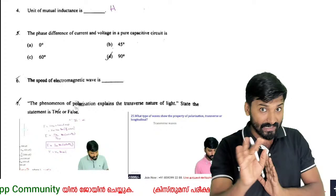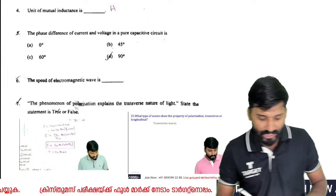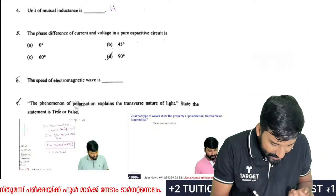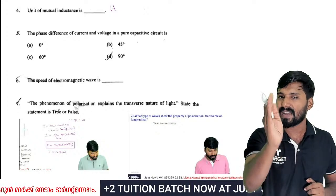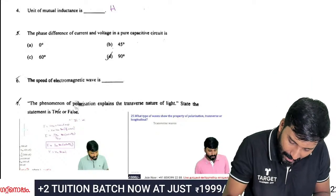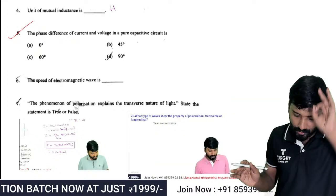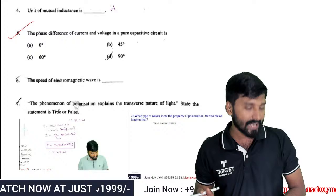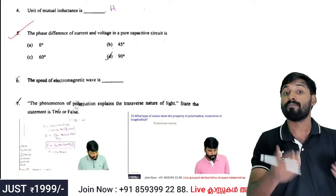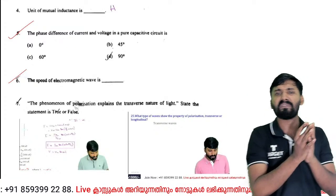Phase difference of current and voltage in a pure capacitive circuit: the phase difference is pi by 2, which is 90 degrees. In a capacitive circuit, current leads voltage. The speed of an electromagnetic wave is another key topic.